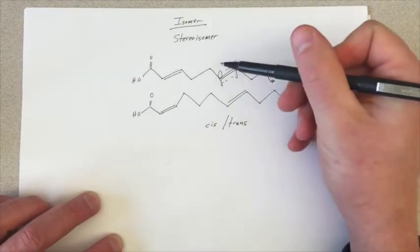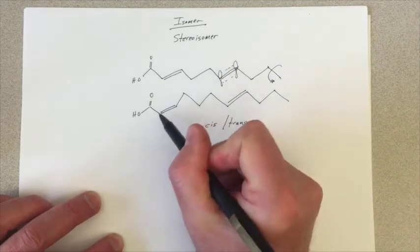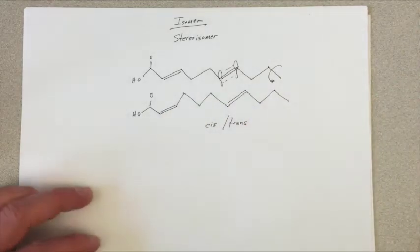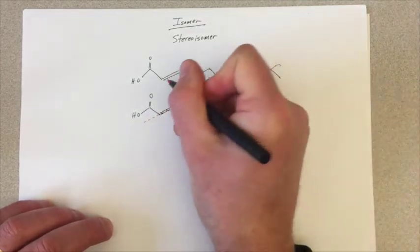And the way we can determine whether we have a cis or a trans version of a particular double bond is what I like to do is sort of draw a little dashed line, I'll do it in different color ink, along the length of the double bond.